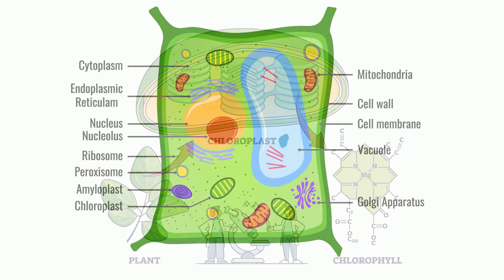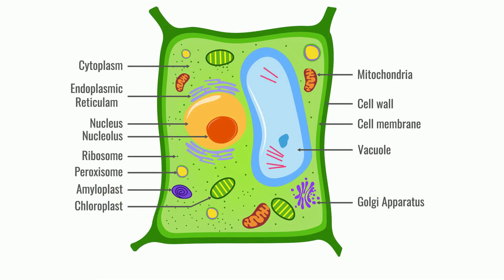Another structure found only in plants is the cell wall. It is a rigid layer made of cellulose that surrounds the plant cell and gives the plant cell structure.